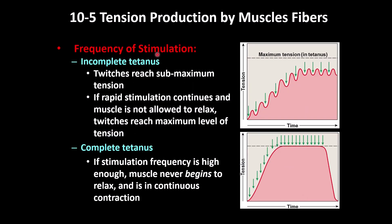Incomplete tetanus is similar to wave summation but stimulation continues until a plateau phase is reached. The muscle tension is much higher than before, but the muscle still relaxes slightly between stimuli. In complete tetanus, stimulation is so fast that the muscle cannot relax at all — tension increases very rapidly to the maximum and stays there until stimulation stops. This can also occur in abnormal states like tetanus, a bacterial infection.